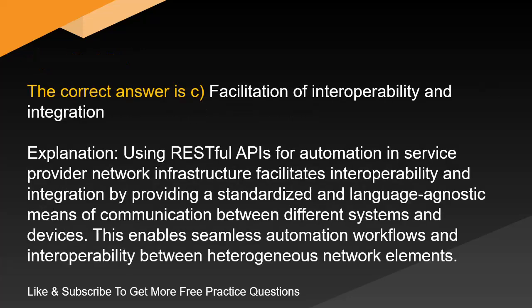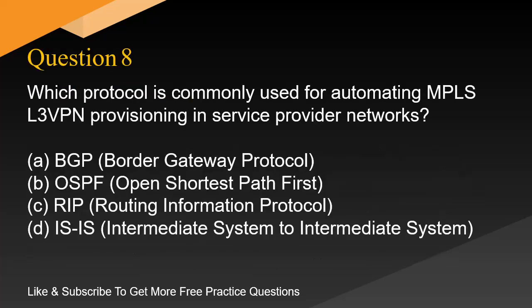The correct answer is C. Facilitation of interoperability and integration. Explanation: Using RESTful APIs for automation in service provider network infrastructure facilitates interoperability and integration by providing a standardized, language-agnostic means of communication between different systems and devices, enabling seamless automation workflows across heterogeneous network elements.